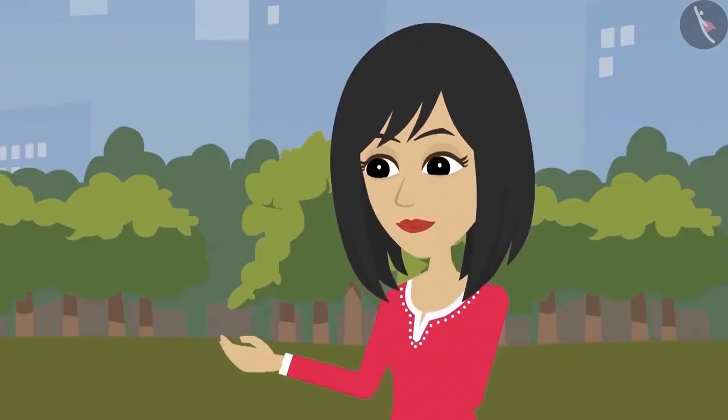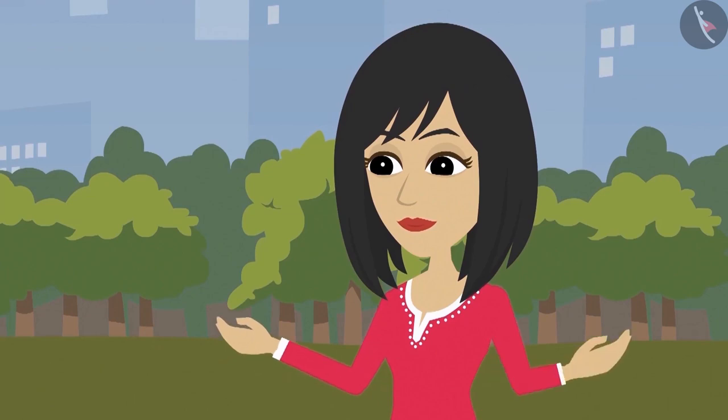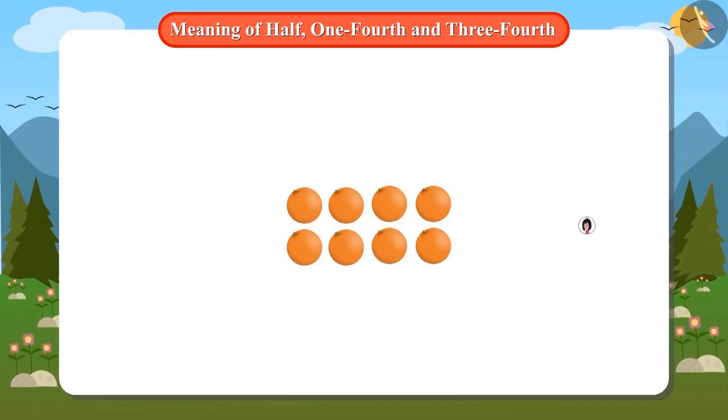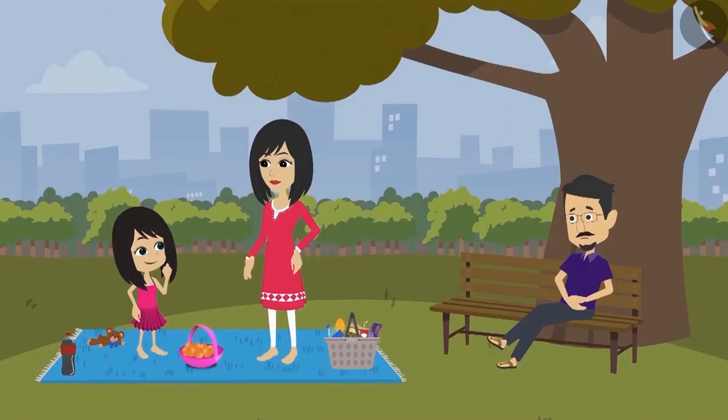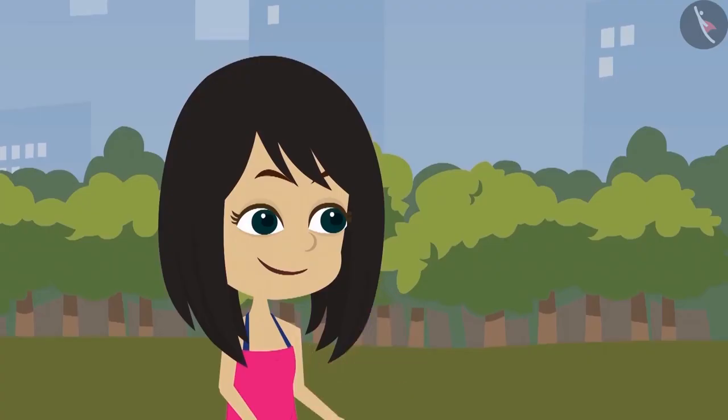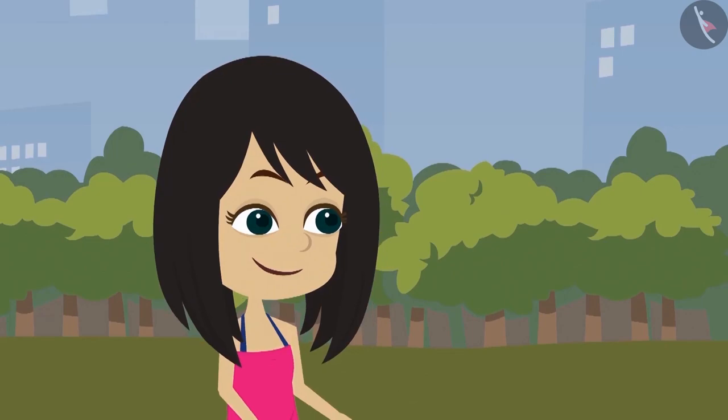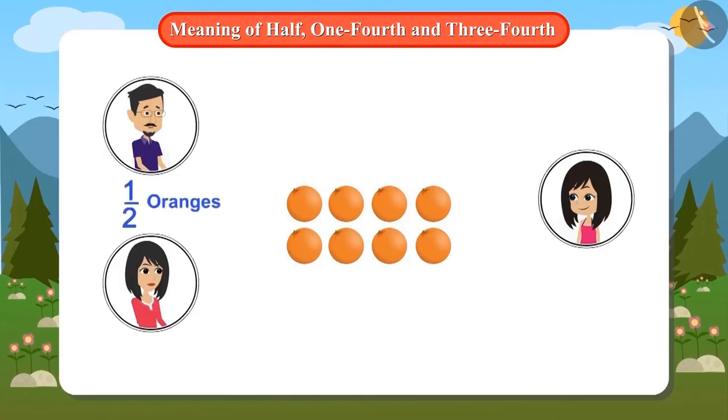Mummy tells her that all these oranges are for three people: for Neha, for Mummy and for Papa. Mummy asks Neha to divide the oranges among the three people by herself. She tells mother that she will give half of the oranges to father, keep half the oranges for herself, and give half of the oranges for her mother.